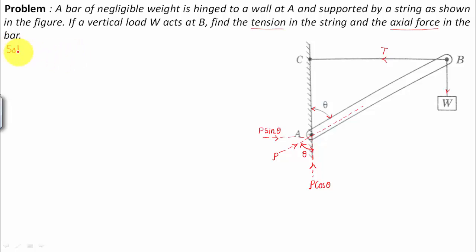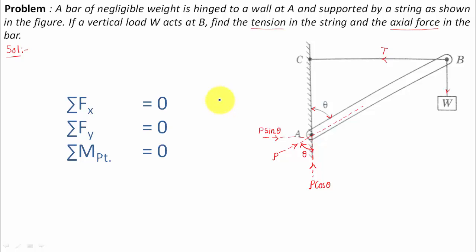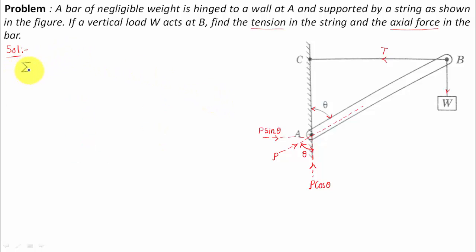We need to find tension T and axial force P. For the arrangement to stay in equilibrium, we have three equations: summation of all forces in X equals zero, in Y equals zero, and the moment of all forces equals zero. We'll apply the moment equation about the hinge at A, making sure all moments sum to zero.